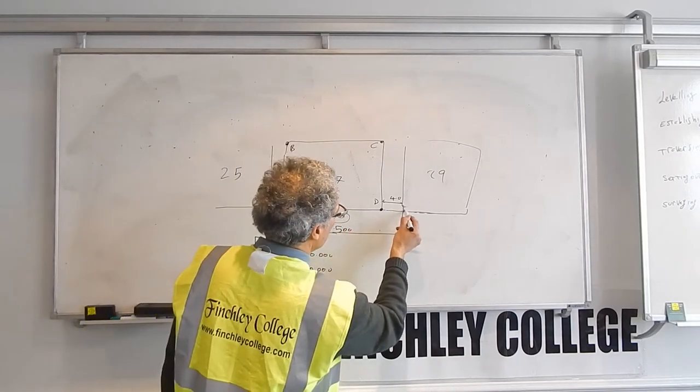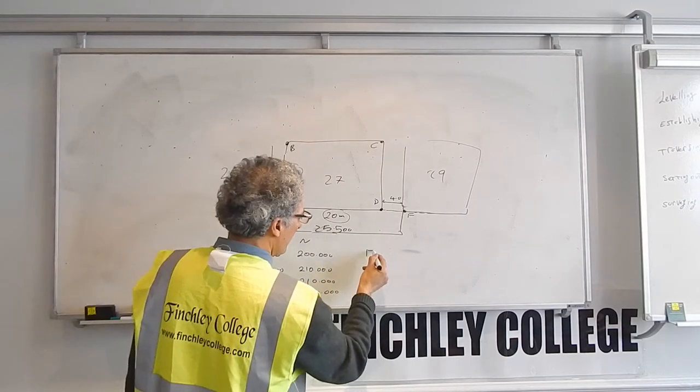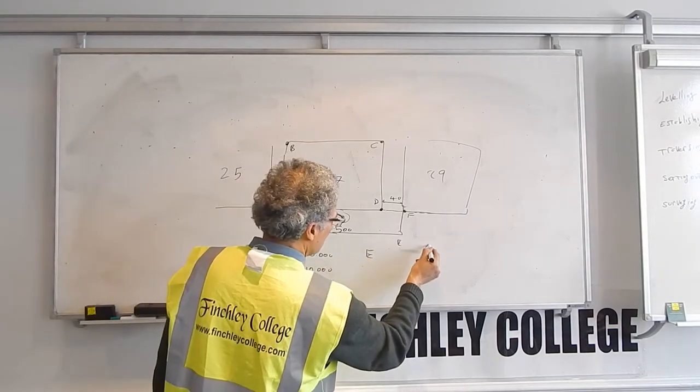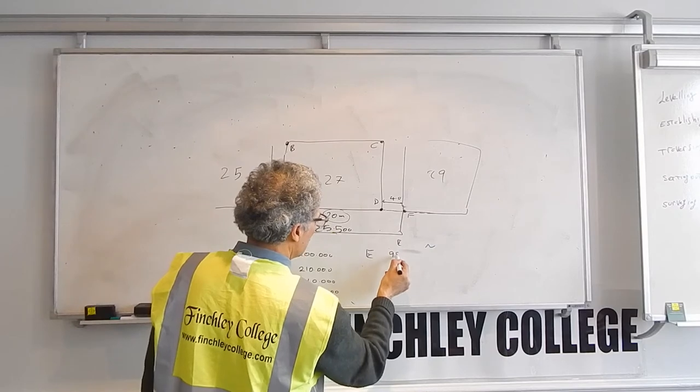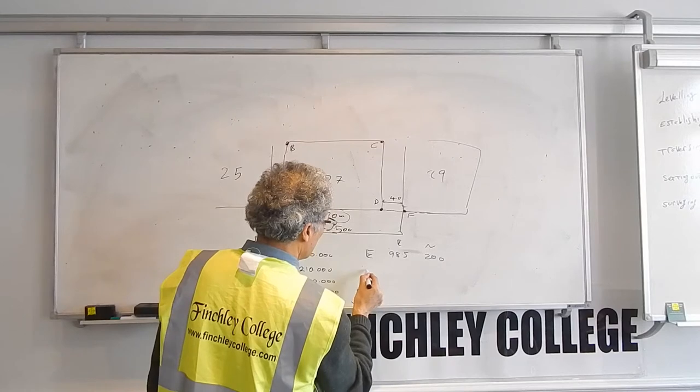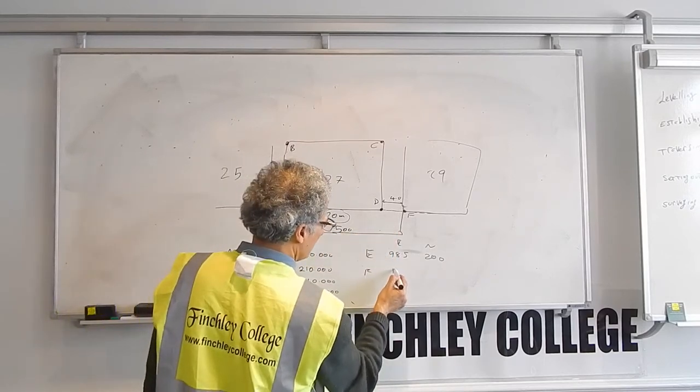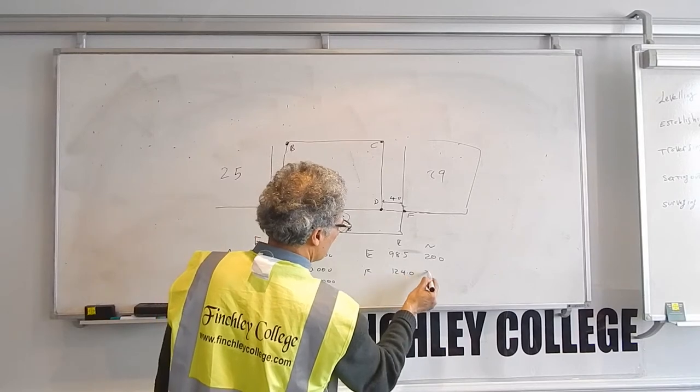E will have easting of 98.5 and a northing of 200. And F will be 124 and a northing of 200.